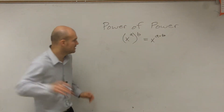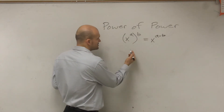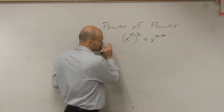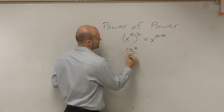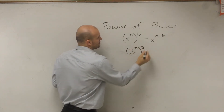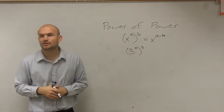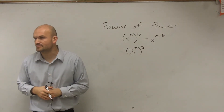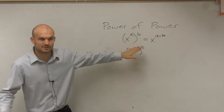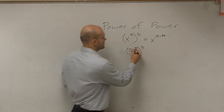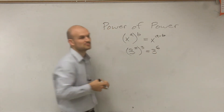So let's take a look at why this would make sense. Let's take 3 squared cubed. Let's take a look at exactly what this means. 3 squared cubed — let's just follow the rule here: 3 squared cubed means you're going to have 3 to the sixth power.